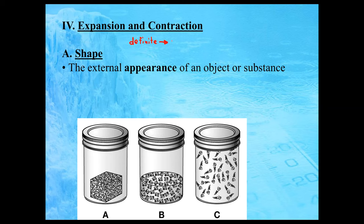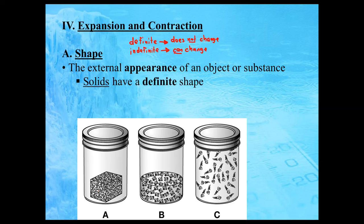If something has a definite shape, it means it does not change. Looking at our three primary states of matter, let's consider this block — like a brick. I'm showing the particles that make it up. Is its shape definite or indefinite? Definite means the shape does not change; indefinite means it can change. Unless you take a hammer and crack the brick in half, its shape is not going to change. Therefore, we say that solids have a definite shape.